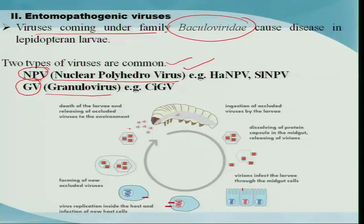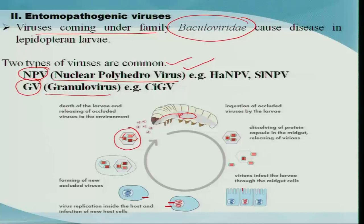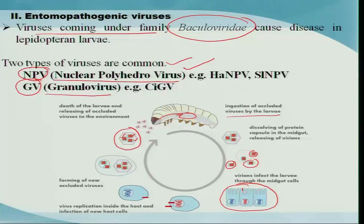Let us look at the mode of action of NPV — the nucleopolyhedrovirus — which normally contains a proteinaceous coating called the polyhedral body, inside which are the virions. When an insect feeds on these, the polyhedral bodies enter the gut system. At the midgut region, due to the alkaline pH, the polyhedral body is dissolved, releasing the virions. These virions bind with the midgut epithelial cells, make a perforation, and start sending nuclear material into the cell's nucleus.